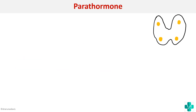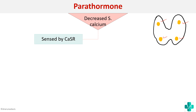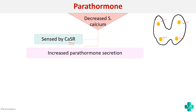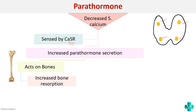First we'll see the actions of parathyroid hormone. Parathyroid hormone is secreted from the parathyroid glands which are present inside the thyroid gland. Whenever there is a decrease in serum calcium, it will be sensed by the calcium sensing receptors present on the parathyroid gland, and thereby there will be increased parathyroid hormone secretion. This in turn will act on the bones to cause increased bone resorption, so that there will be an increase in serum calcium.